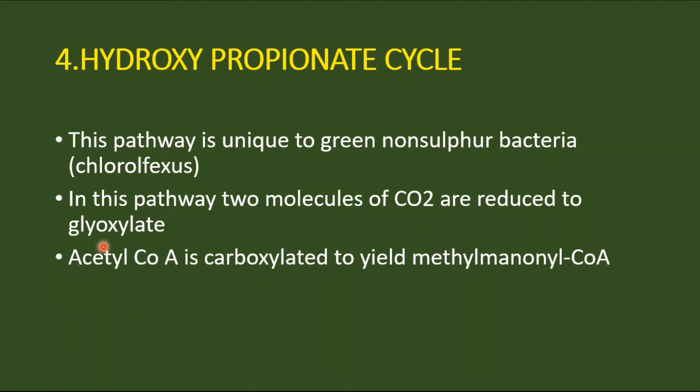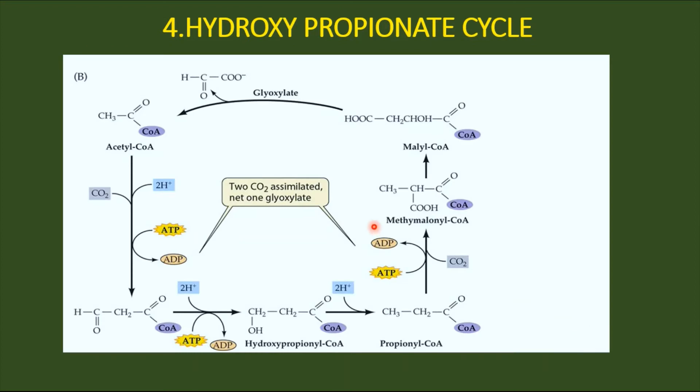Here acetyl-CoA is carboxylated to yield a compound called methylmalonyl-CoA. Let's see the cycle. This is an anoxygenic phototroph, meaning it does not require oxygen at all.